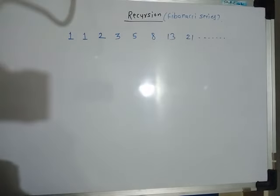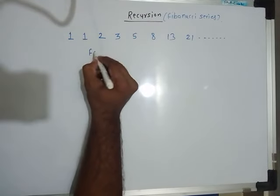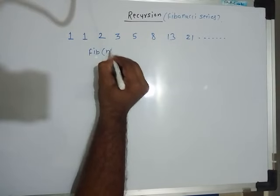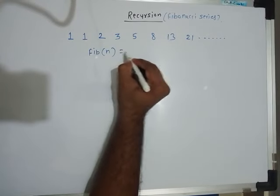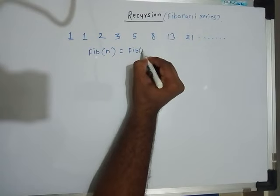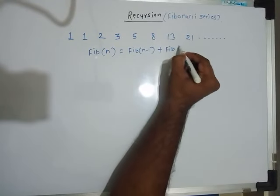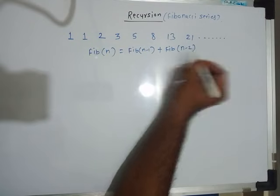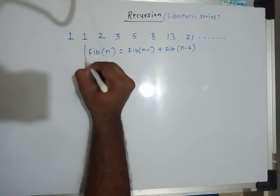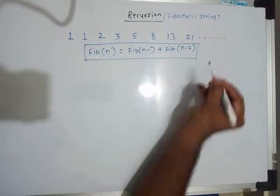If I write a generalized formula, the nth Fibonacci number — fib(n) — is equal to the (n-1)th Fibonacci number plus the (n-2)th Fibonacci number. This is the formula we will use.